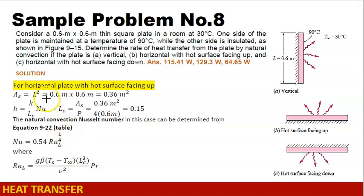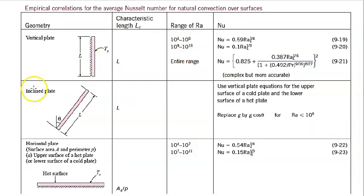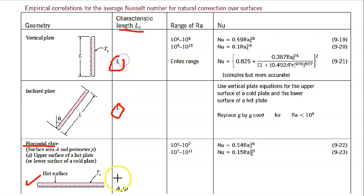For the horizontal plate with the hot surface facing up, case B, we still have the same area: L squared, 0.6 meter by 0.6 meter. For the convection coefficient we use the same formula, but this time our characteristic length is different. Looking at our table, when the hot surface is facing up for a horizontal plate, the characteristic length is no longer L. Instead, the characteristic length equals the surface area of the plate divided by the perimeter. We can then use the appropriate equations to solve for the Nusselt number.